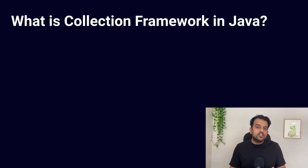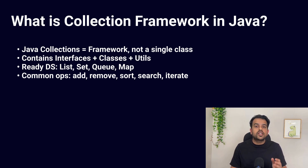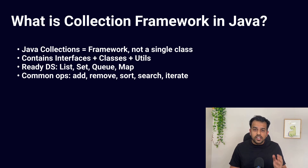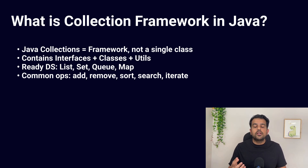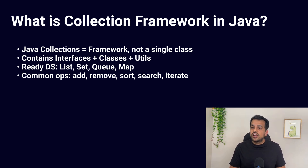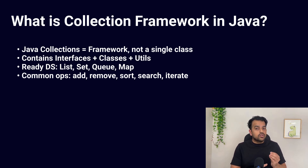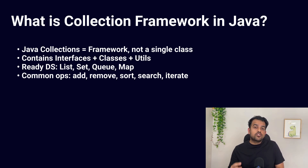Our first question is: what is the Java Collection Framework? The Java Collection Framework is a set of tools that helps us organize, store, and manage groups of data easily. It includes various types of collections like List, Set, and Map. In interviews, they want to see that collections are not just one class — it is a proper framework with interfaces, classes, and utility methods. It gives ready-made data structures so we don't need to write our own implementation, and it provides common operations like add, remove, search, sort, and iterate in a consistent way. Your answer should mention three things: it is a unified architecture, it has interfaces and implementations, and it helps manage groups of objects effectively.